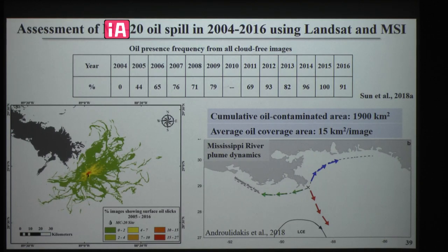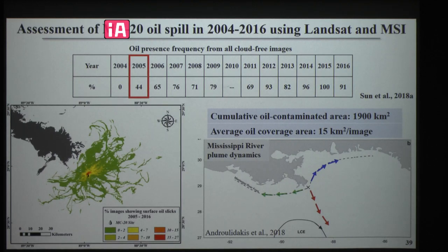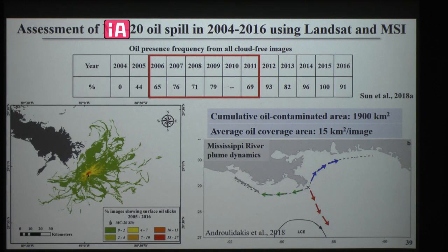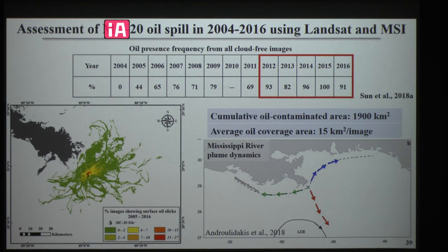For oil presence frequency: in 2004, no cloud-free images detected oil slick in this location. In 2005, it was 40%. From 2006 to 2011, about 70% of cloud-free images detected oil slick. The year 2010 was omitted to avoid confusion from the Deepwater Horizon oil spill. From 2012 to 2016, this percentage increased to more than 80%.